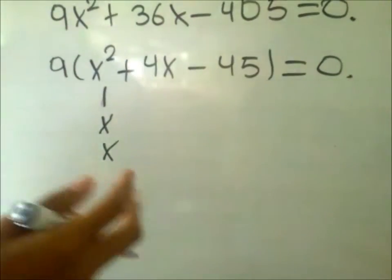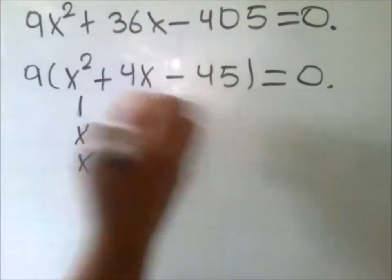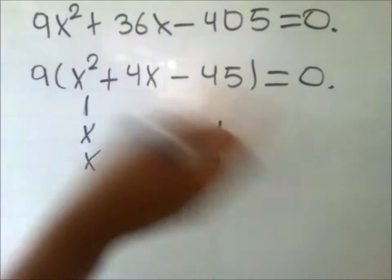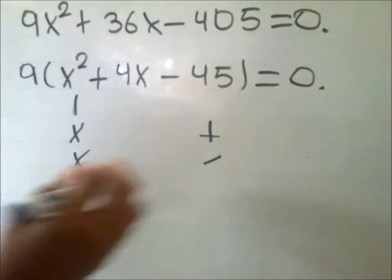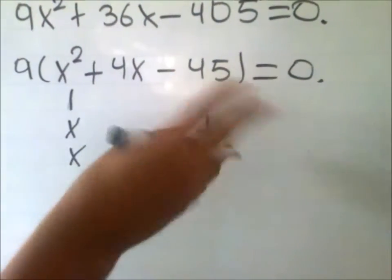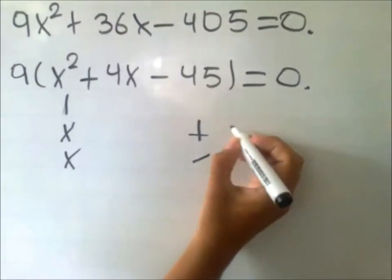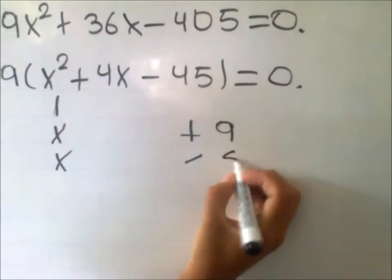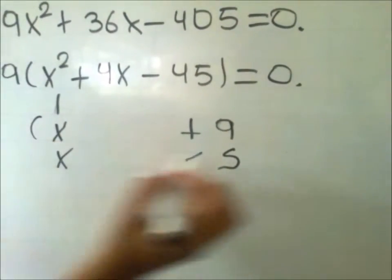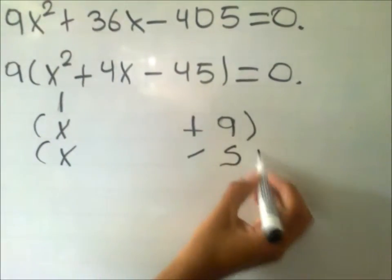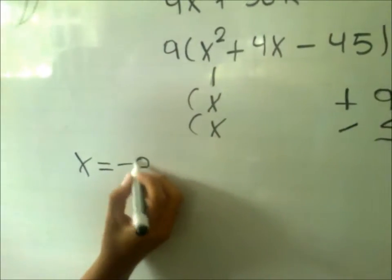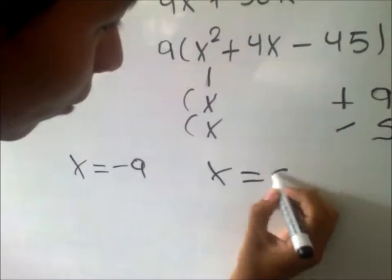We look for two numbers that multiply to 45 and that give us 4x when combined, which would be 9 and 5. This gives us the answer to the equation: x equals negative 9 and x equals 5.